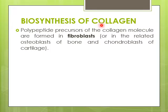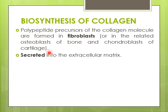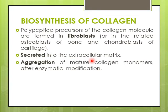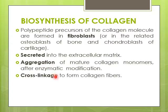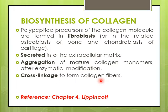Biosynthesis of collagen: precursors of the collagen molecule are first prepared in fibroblasts — for example, osteoblasts of bone and chondroblasts of cartilage. These are then secreted into the extracellular matrix, where collagen monomers that have matured get aggregated in the presence of enzymes. Finally, aggregated mature collagen monomers undergo cross-linkage, and collagen fibers are formed.